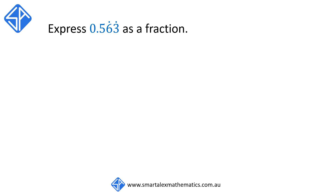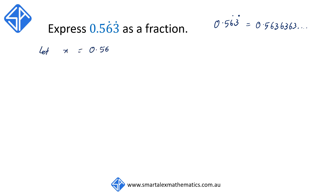For our second example, we're going to be converting 0.563 with the repeater on top of the 6 and the 3. This means that the digit 5 doesn't get repeated — only the digits 6 and 3 are repeated continuously. We're going to start off the same way: let x equal to 0.563636363...